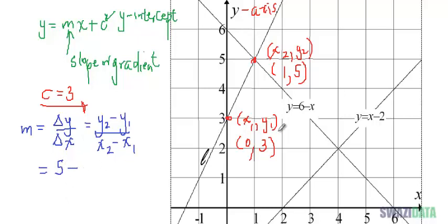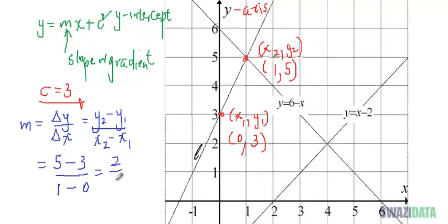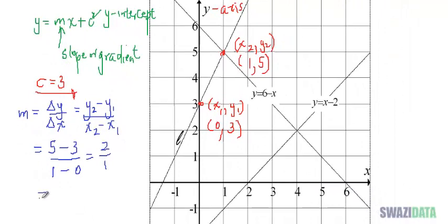So now we calculate: m equals y2 minus y1 over x2 minus x1, which is 5 minus 3 over 1 minus 0. That gives us 2 over 1, which equals 2. So m equals 2.